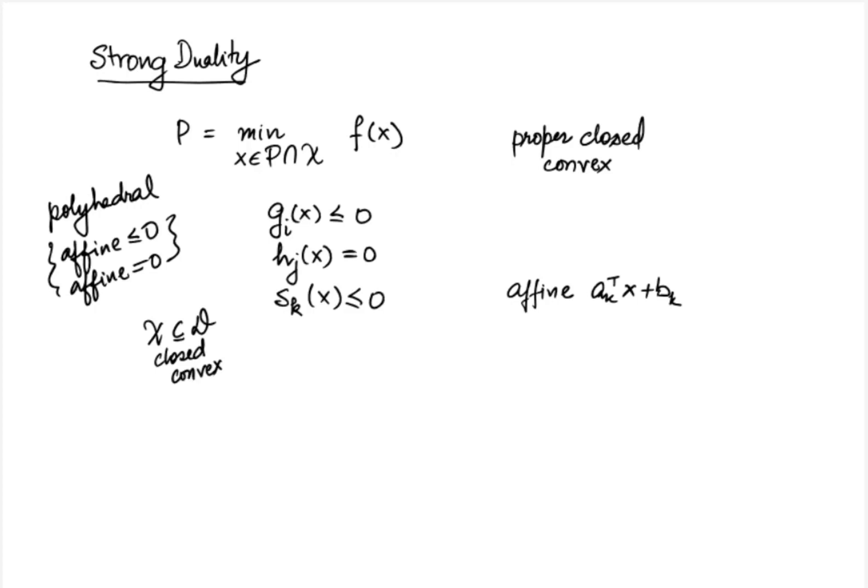This is a convex optimization problem because we have a convex objective, convex inequalities, and affine equality constraints. Different from the general standard form we looked at earlier, we have taken special care to explicitly write down the affine inequalities and equalities separately from the g_i's, and likewise the polyhedral components separately from calligraphic X.